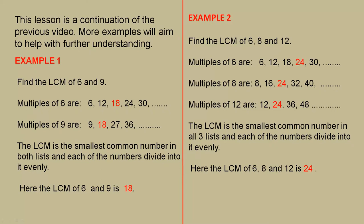Example 1. Find the lowest common multiple of 6 and 9. Here are the multiples of 6. Here are the multiples of 9. The LCM is the smallest common number in both lists and each of the numbers divide into it evenly. So here the LCM of 6 and 9 is 18. That's the lowest number that occurs in both lists.